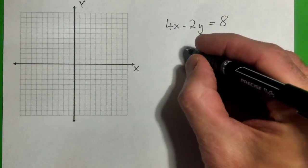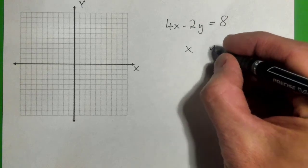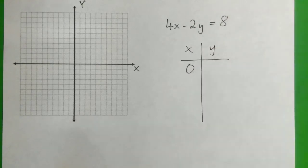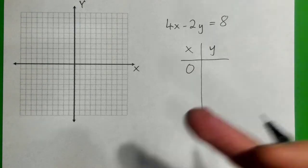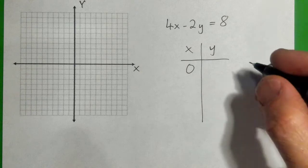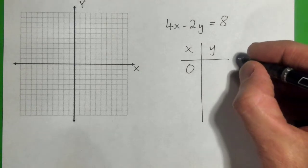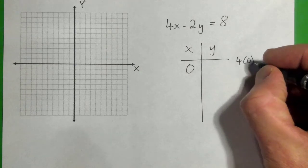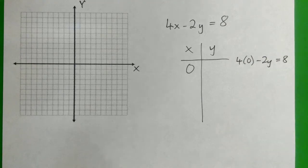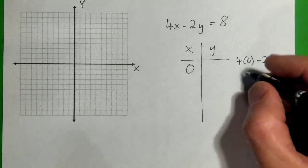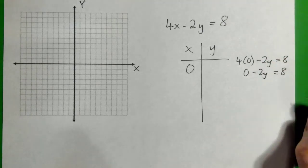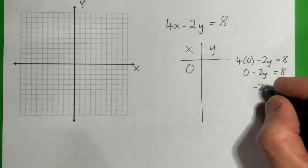So the way we do that is make a little table for x and y, and we just start out by plugging 0 in for x, and then figure out what y is. So if I plug 0 in for x, I'll get 4 times 0 minus 2y equals 8. So that's just 0 minus 2y equals 8, or just negative 2y equals 8.